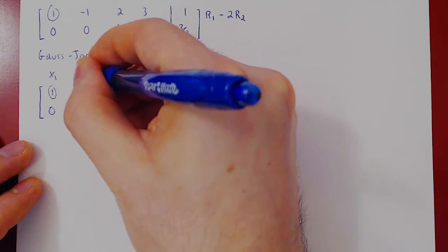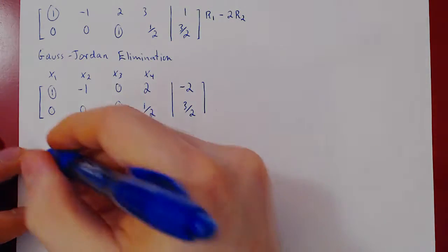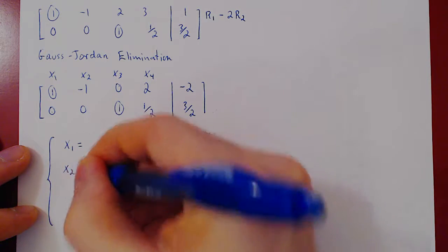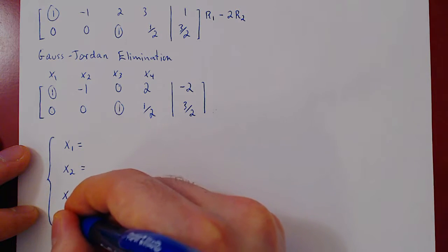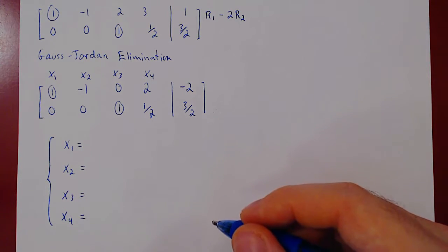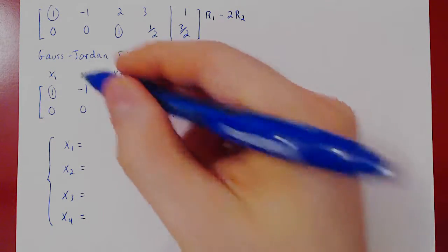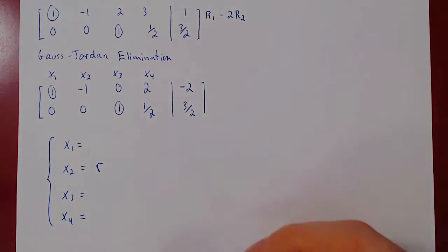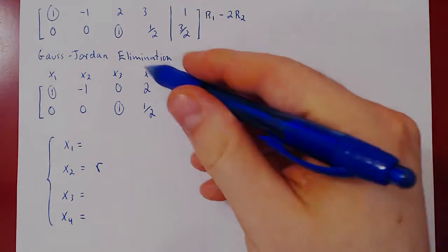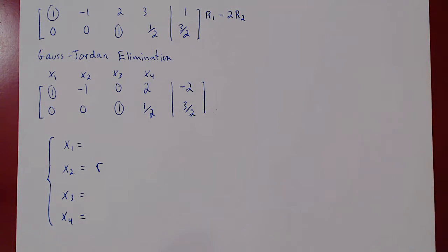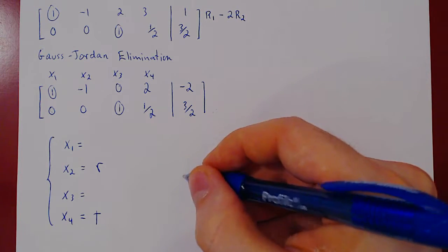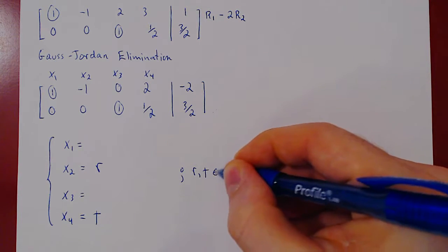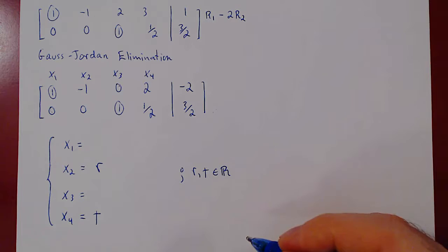The variables were x1, x2, x3, and x4. As always, we hand all the free variables, so x2 is free, so it can take on any real value, it becomes a parameter, so we could say x2 equals r. x4 is also free, we could call x4 s or t, any letter will do, so we'll use t. We have to be explicit about this, that r and t can range over all real values.